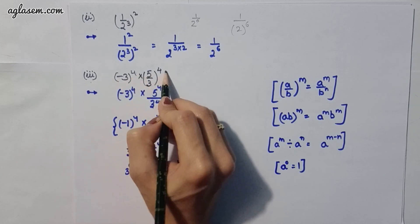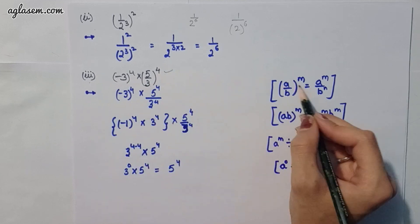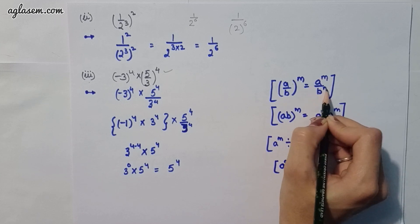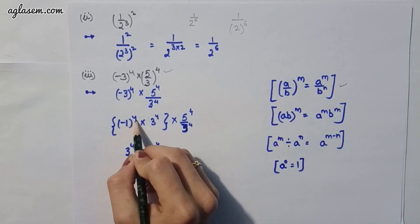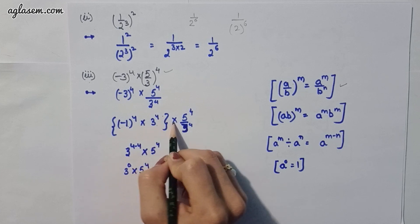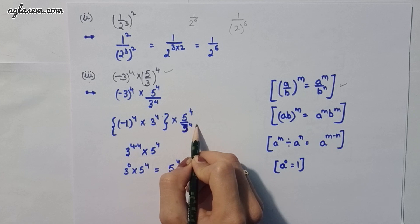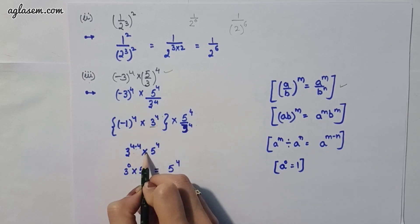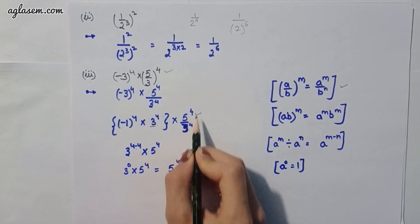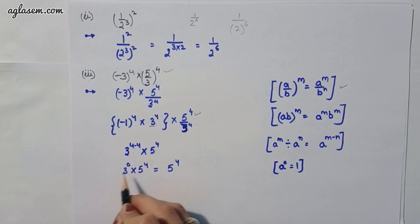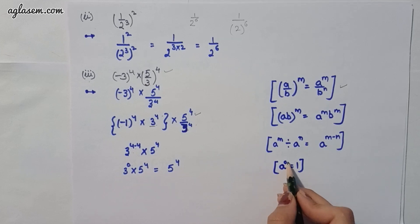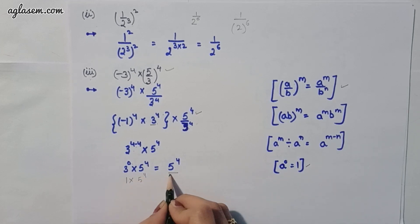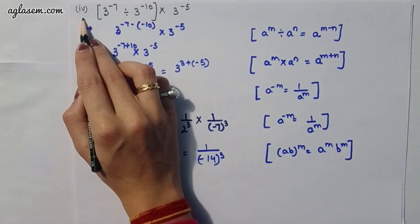Moving to the third part: (-3)^4 × (5/3)^4. We apply the formula (a/b)^m = a^m / b^m. This gives (-1)^4 × 3^4 × 5^4 / 3^4. The 3^4 terms cancel — applying a^0 = 1 — leaving us with 1 × 5^4, so the answer is 5^4.